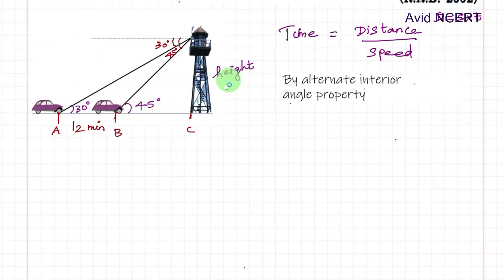The side opposite to the angle is always the opposite, which is height by base, which is BC. This equals 45 degrees, which is tan 45 degrees. So height by BC equals tan 45.